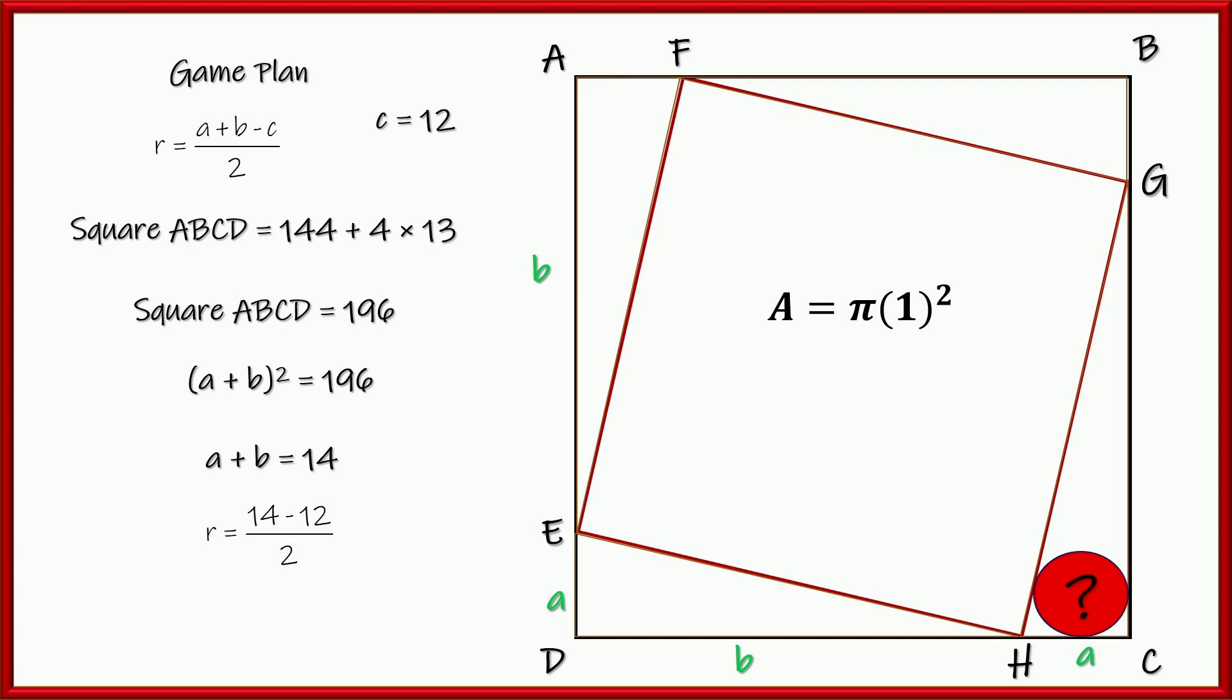C is 12. 14 minus 12 divided by 2, that's famously known as 1. So, I can use that in my formula for the area of a circle, pi R squared. R is 1, 1 squared is 1. The area of that little red circle is just pi. How cool is that?